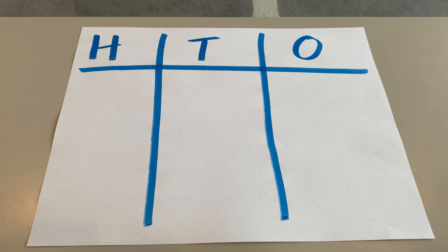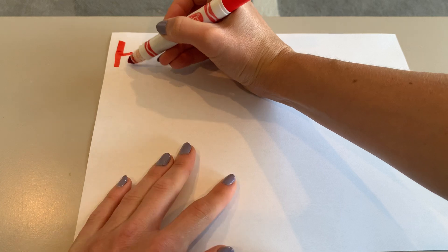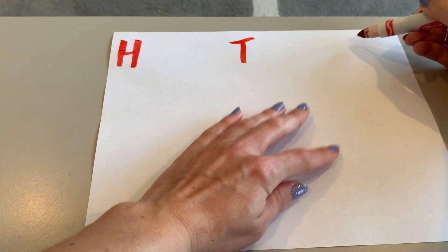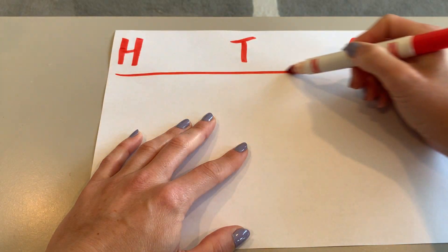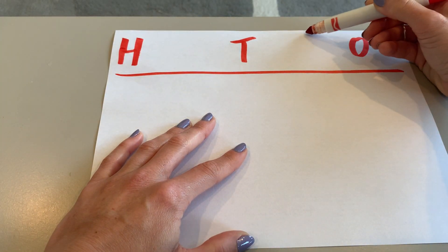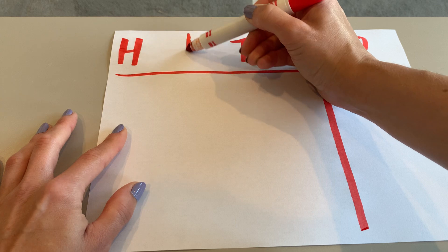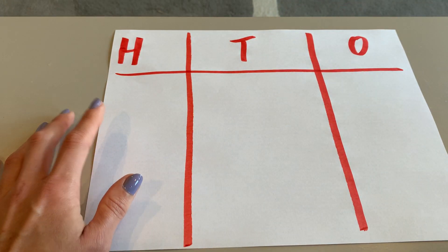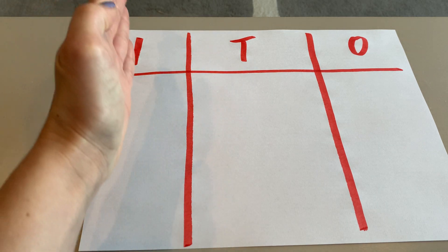If you're not sure how to make one of these charts, I'm going to show you right now using a blank piece of paper. You're going to write your H, T, O, just like that. Then you're going to underline it, one line down between the T and the O vertically, and another line going up and down between the H and the T vertically. That gives you your HTO place value chart.